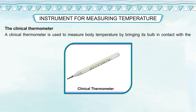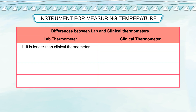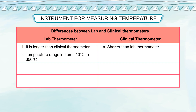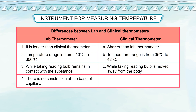The clinical thermometer: A clinical thermometer is used to measure body temperature by bringing its bulb in contact with the body. Differences between lab and clinical thermometers — Lab thermometer: longer, temperature range −10°C to 350°C, bulb remains in contact with the substance while taking reading, no constriction at the base of capillary. Clinical thermometer: shorter, temperature range 35°C to 42°C, bulb is moved away from the body after taking reading, has a constriction at the base of the capillary.